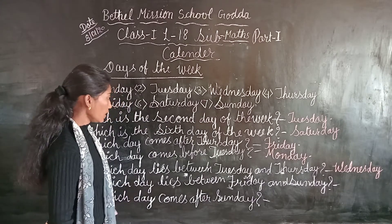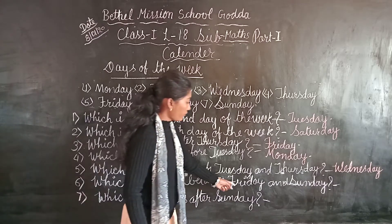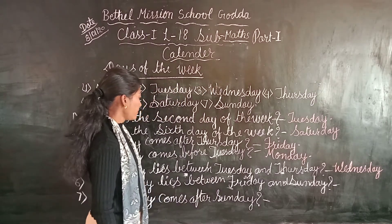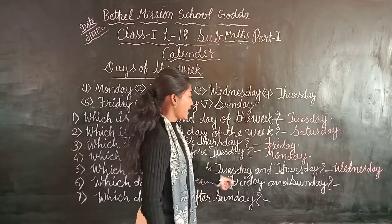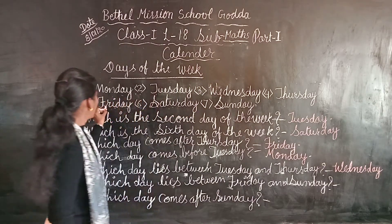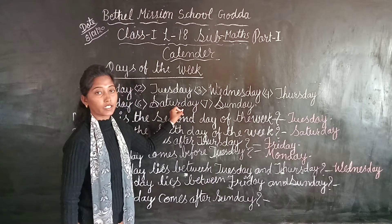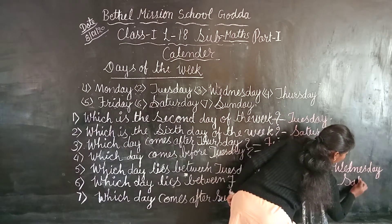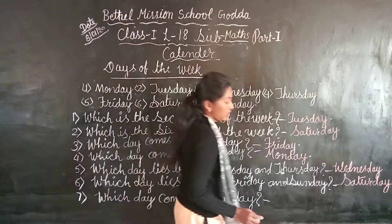Next, sixth question: which day lies between Friday and Sunday? Between means Ke Beech. Which day comes between Friday and Sunday? We will see Friday and Sunday — Saturday comes between them. We will write here Saturday.